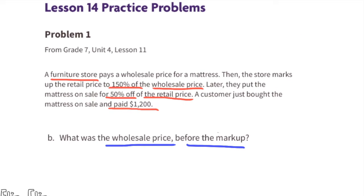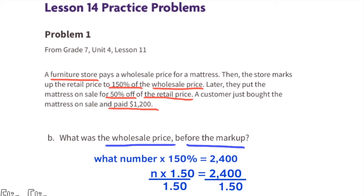Part b: What was the wholesale price before the markup? Since it was marked up 150%, we can ask what number times 150% equals 2400. We can rewrite that as n times 1.5 equals 2400. Next, solve for n by dividing both sides by 1.5.